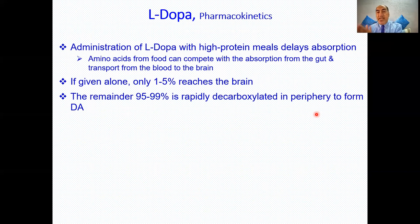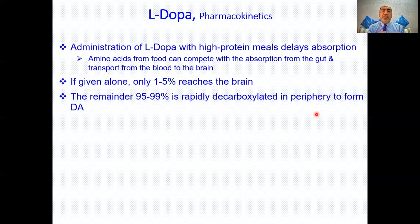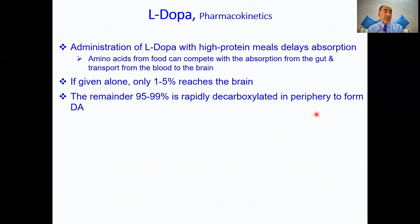Regarding pharmacokinetics — because levodopa is quite similar to tyrosine, which is an amino acid, if you are taking a high-protein meal, take levodopa one hour before or two hours after the meal. This is because amino acids, specifically tyrosine, can compete with levodopa for absorption from the gut and for passage through the blood-brain barrier. It is also generally advised to take it with a meal to decrease GIT upset, but avoid high-protein and high-fat meals at the same time.